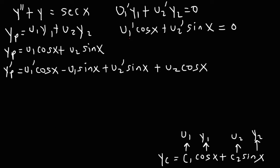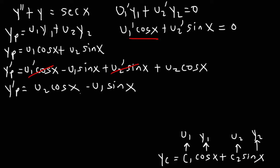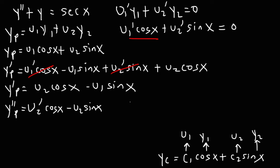Notice that u1 prime cosine and u2 prime sine sum to zero by our imposed condition, so we can eliminate them. Thus y prime p equals u2 cosine x minus u1 sine x. Now finding y double prime p using the product rule again: u2 prime cosine x minus u2 sine x, minus u1 prime sine x, minus u1 cosine x.